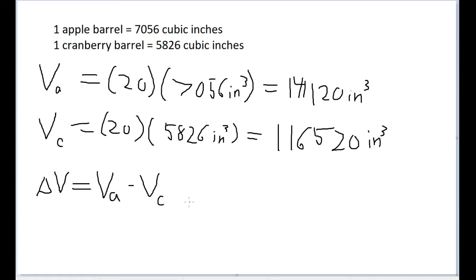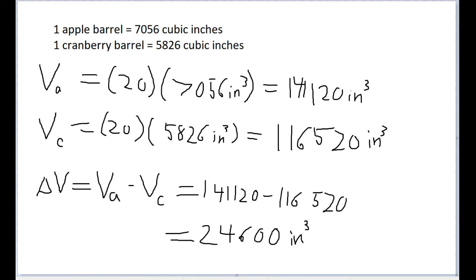So now let's just simply subtract these values from each other. So that's 141,120 minus 116,520. And the discrepancy we get for this is 24,600 cubic inches. So that is our discrepancy between 20 cranberry barrels and 20 apple barrels.